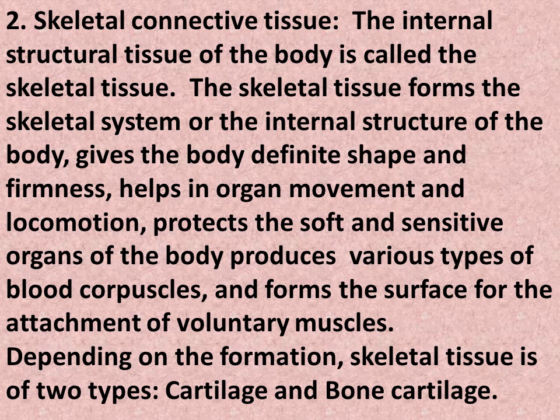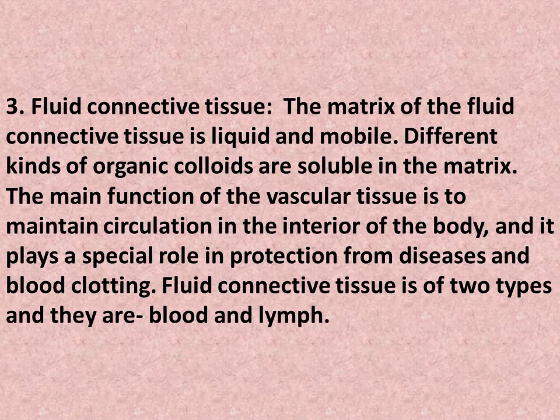2. Skeletal connective tissue: the internal structural tissue of the body is called skeletal tissue. It forms the skeletal system, gives the body definite shape and firmness, helps in organ movement and locomotion, protects the soft and sensitive organs, produces various types of blood corpuscles, and forms the surface of attachment of voluntary muscles. Depending on formation, skeletal tissue is of two types: cartilage and bone. 3. Fluid connective tissue: the matrix is liquid and mobile, with different organic colloids soluble in the matrix. Its main function is to maintain circulation inside the body and plays a special role in protection from diseases and blood clotting. Fluid connective tissue is of two types: blood and lymph.